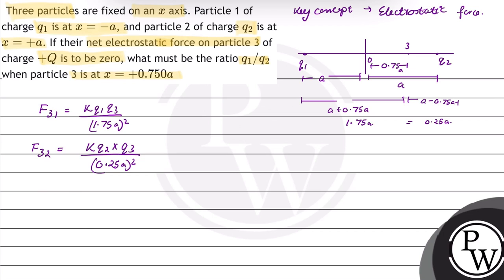In this question, we are given that the net electrostatic force on particle 3 is 0. So, the net force F31 plus F32 will be equal to 0. Coming to the direction, the force due to particle 1 on particle 3 will be in the positive x direction, and the force due to particle 2 on particle 3 will be in the negative x direction.